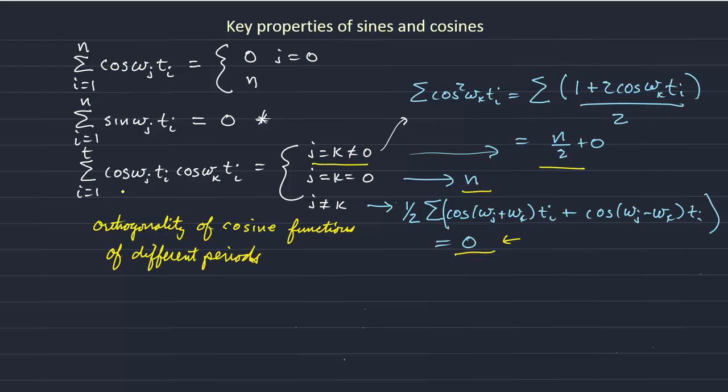You can imagine this cosine function being a vector having n values in it. And this cosine function at the kth harmonic also being a vector. What we're doing is simply a dot product between these two vectors.